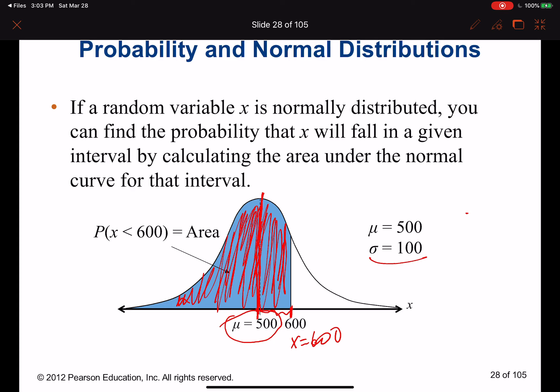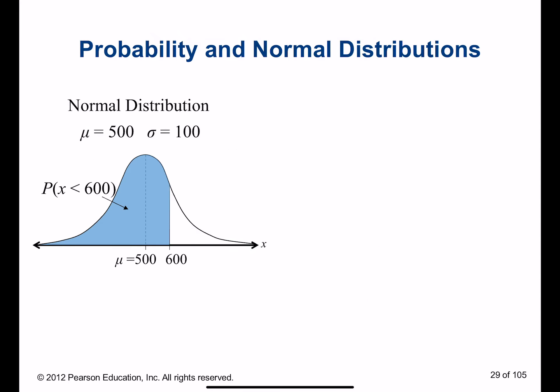We need to find how much the z-score will be given a probability. First, we find what z-score matches our x equal to 600. The z-score is limited from negative 3.49 up to positive 3.49 — that's because we are standardizing.